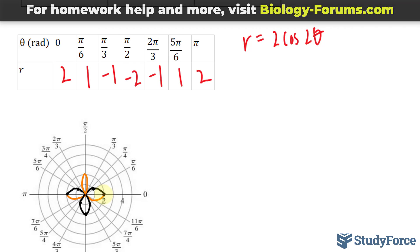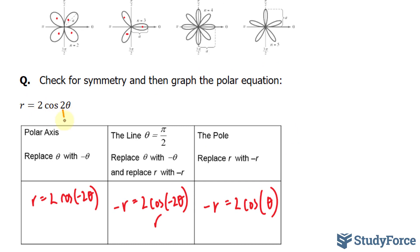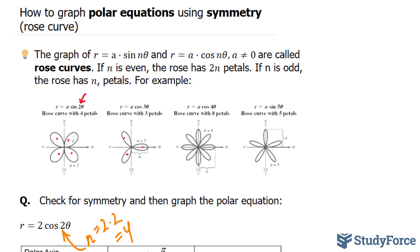We have 4 petals, and that was exactly what we expected, given that our n value, being 2, gets multiplied to 2, and you end up with 4 petals. And there you have it. That is how to graph polar equations using symmetry.